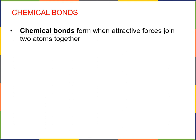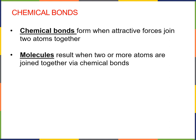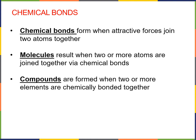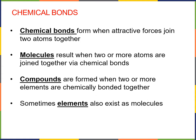Today in this lecture, we're going to consider what happens when two or more atoms come together. Chemical bonds are the result of attractive forces that join two atoms together. Molecules result when two or more atoms are joined together via chemical bonds. Compounds are formed when two or more elements are chemically bonded together. And sometimes elements can also exist as molecules.